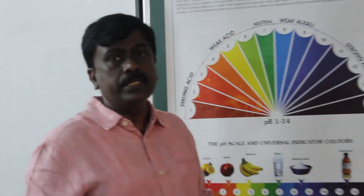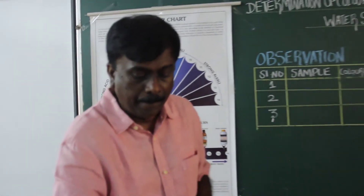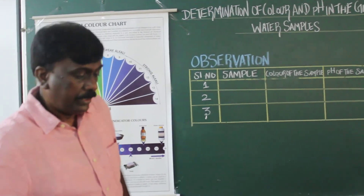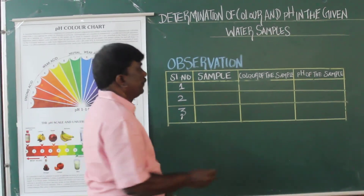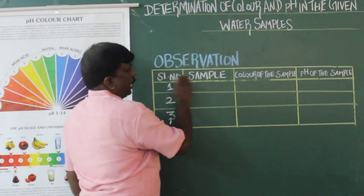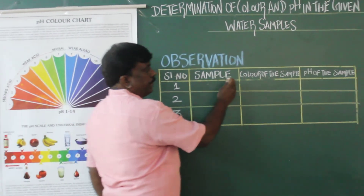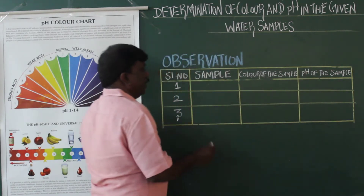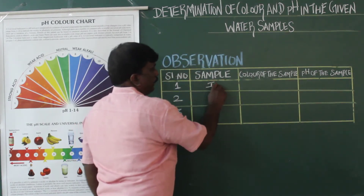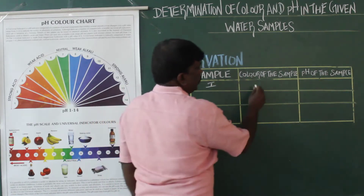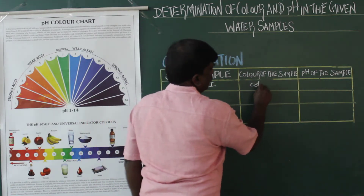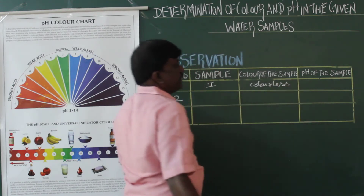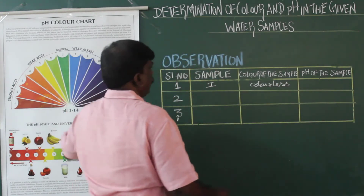This water is a consumable one. Now we have to tabulate. When tabulating, classify the columns as: serial number, sample, color of the sample, and pH of the sample. For sample letter 1, the color of the solution is colorless and the pH value is 4.